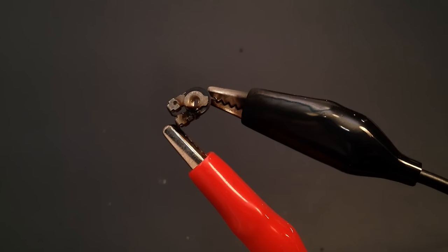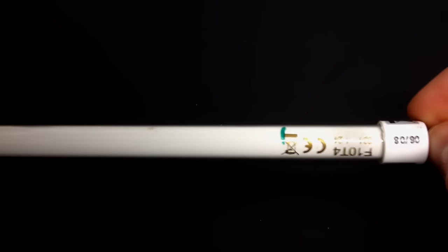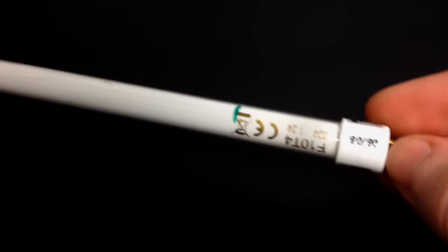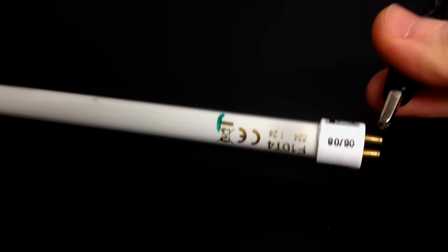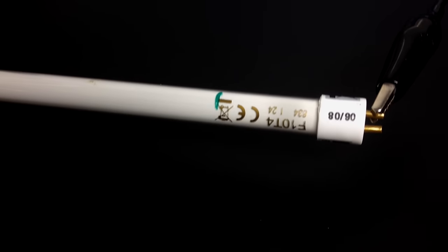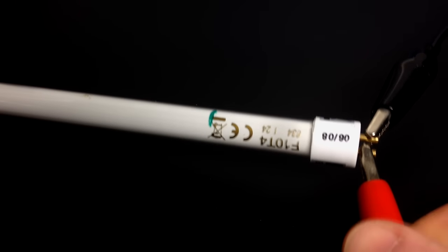And this... Should have hit record further in advance. This fluorescent tube has a small filament at each end, hence the two pins, that exhibits an effect called thermionic emission to get the flow of electrons going.